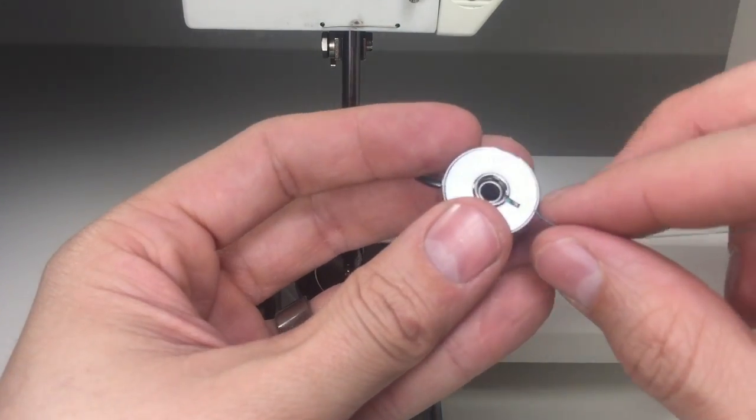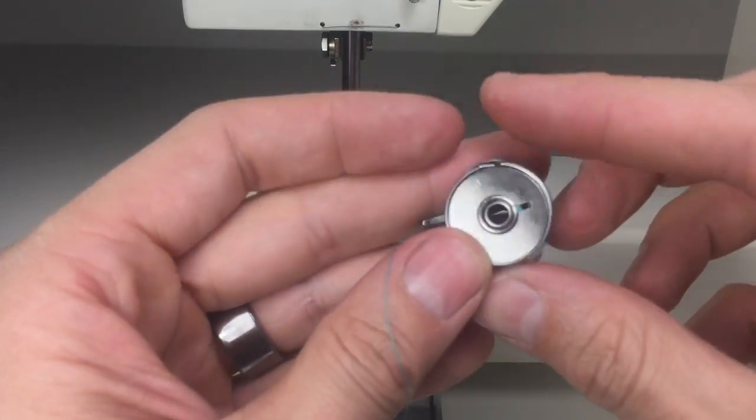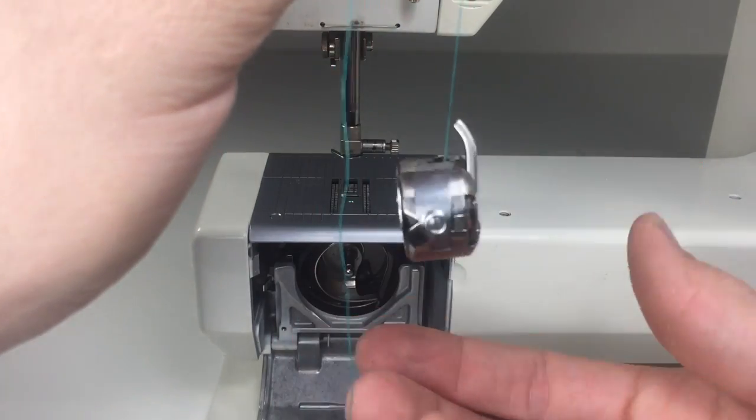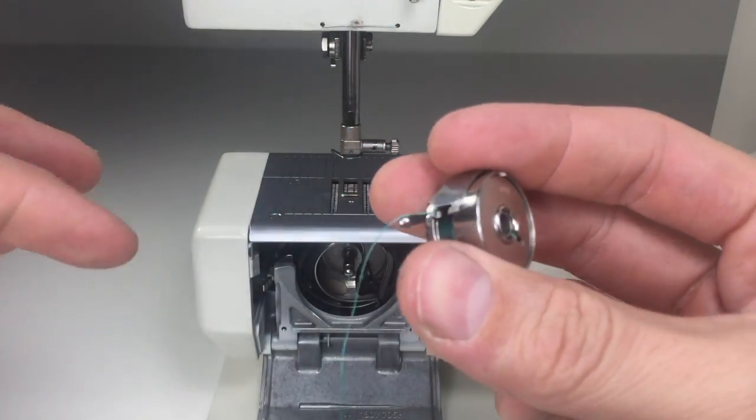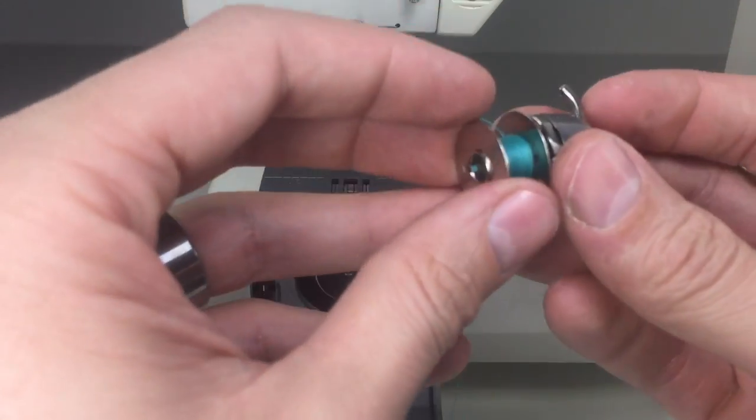We're going to load this bobbin. In this case it's supposed to spin clockwise, so we're going to get under the tension spring and ensure that it has plenty of tension. This is not a foolproof method in checking bobbin tension, but if you can hold your bobbin upright without it falling, you are in the tension mechanism.